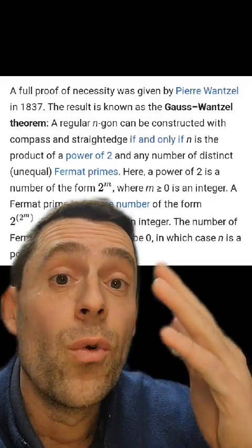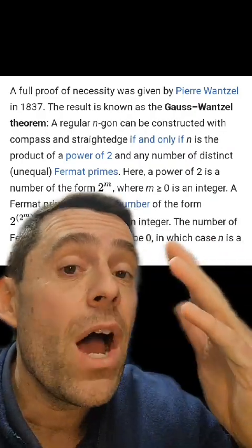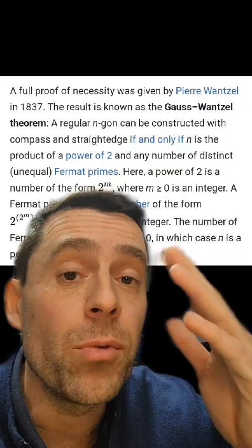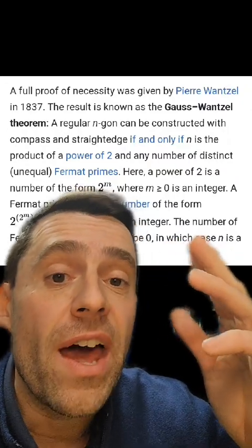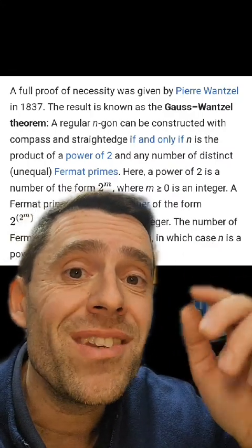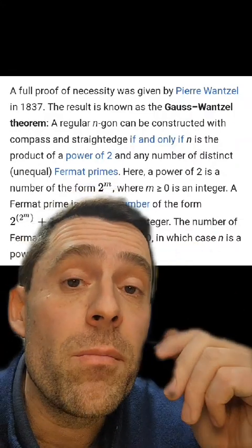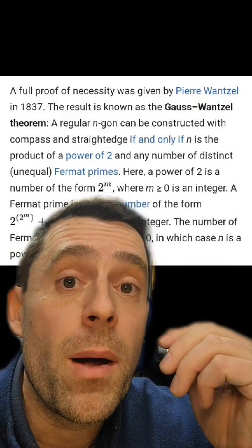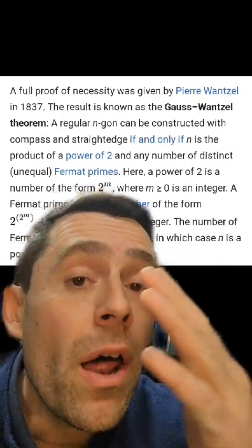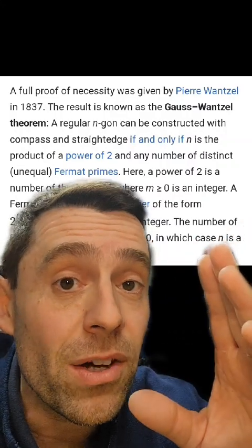After that, actually, Wantzel proved sort of the converse of that theorem, and now we know that the only constructible polygons are those where the number of sides is a product of Fermat primes times some power of 2. So, for example, 3 is a Fermat prime, 5 is a Fermat prime, 7 is not a Fermat prime, so there is no construction of a heptagon.